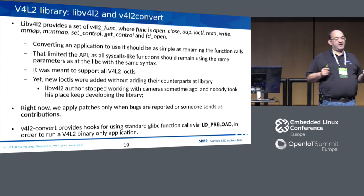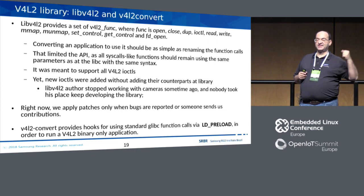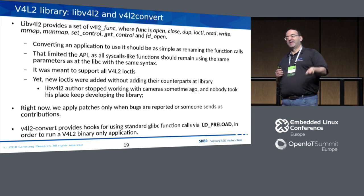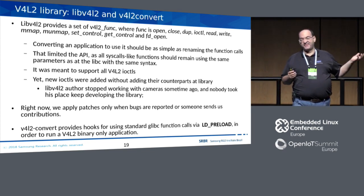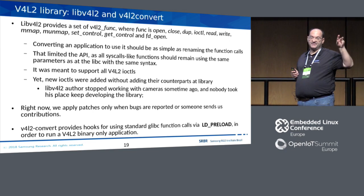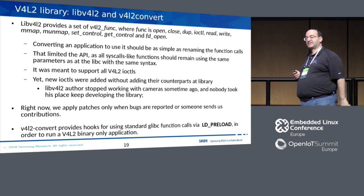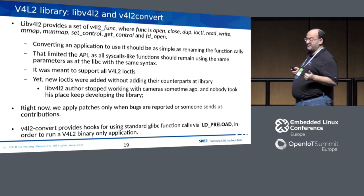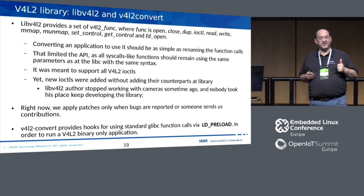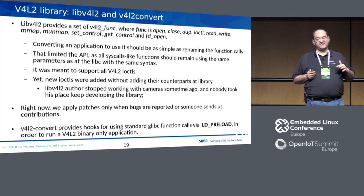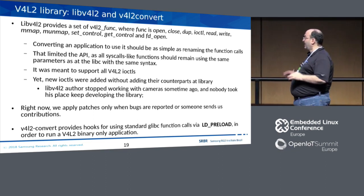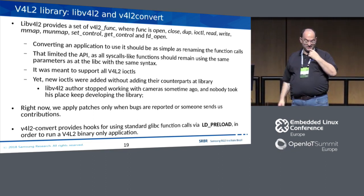It was really easy to convert existing applications to use the library — the only thing you needed to do was find open, close, ioctl, etc., and replace them by adding the v4l2_ prefix. The problem is that we had to stick exactly with the same Video for Linux API as before. We couldn't add new things because applications wouldn't recognize them. So it was easy to implement but has some drawbacks.